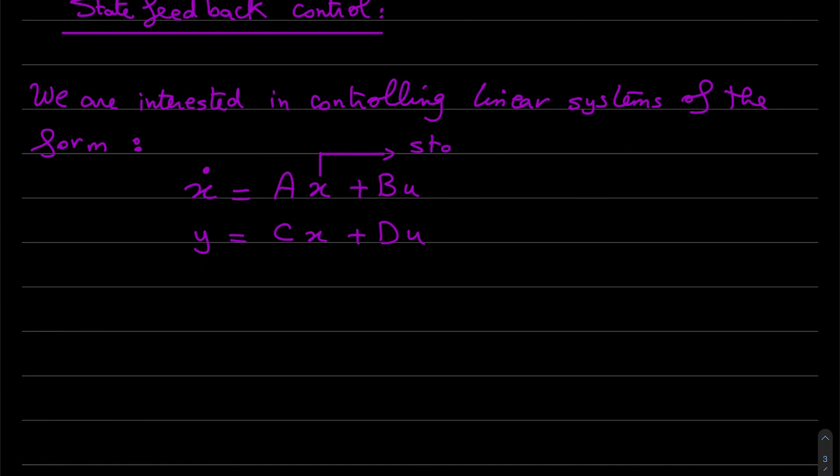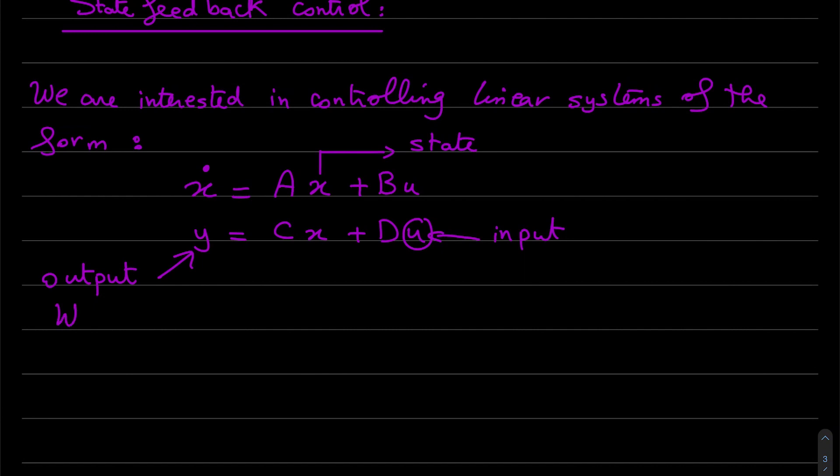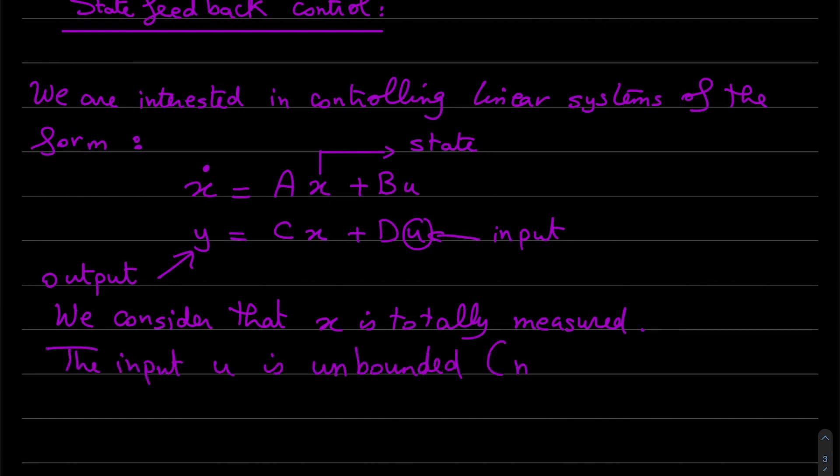x is the state, u is the input and y is the output. We consider that x is totally measured and we consider that the input is unbounded or there is no saturation.